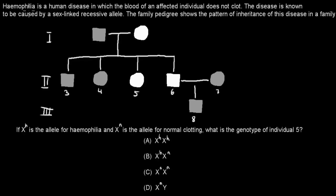The first question is: Hemophilia is a human disease in which the blood of an infected individual does not clot. The disease is known to be caused by a sex-linked recessive allele. Family pedigree shows the patterns of inheritance of this disease in a family. If XH is the allele for hemophilia and XN is the allele for normal clotting, what is the genotype of individual 5? This individual here. A, XHXH. B, XHXN. C, XNXN. Or D, XNY. Are you ready? Attempt the question.